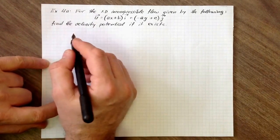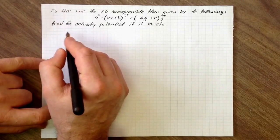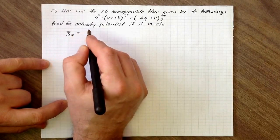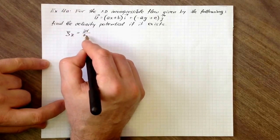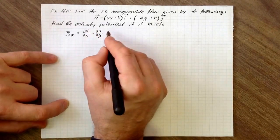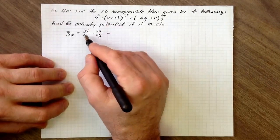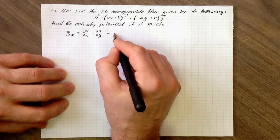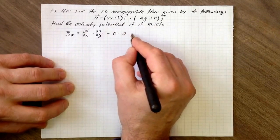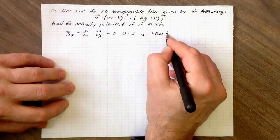In the first part, we're looking for the z-component of vorticity. Zeta_z is equal to delta v per delta x minus delta u per delta y. In our case, delta v per delta x is zero, and delta u per delta y is zero. So we can say the flow has potential.